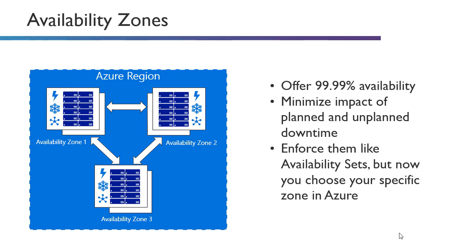Essentially, you choose the zone number. If you're building a VM, one VM will go in availability zone zero, one will go in availability zone one, and then you know that they're in separate data centers in the same region.